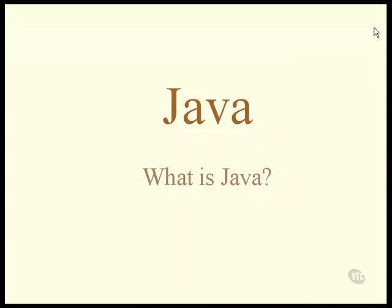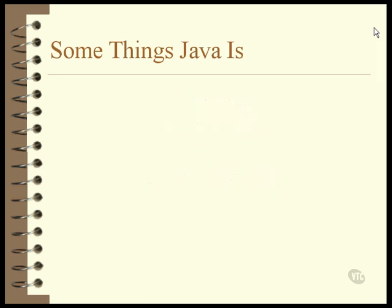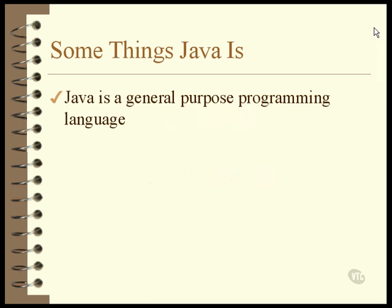Unlike most programming languages, Java has been hyped and discussed in the press and has acquired an odd kind of image in some ways. Let me tell you just what Java really is. Java is a general purpose programming language. In this regard, it's just like C, C++, Pascal, COBOL, FORTRAN, and any number of others.